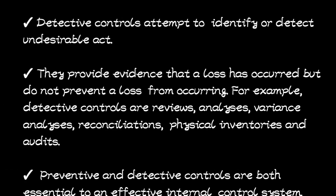Now let's look at detective controls. Detective controls are about detecting — finding out. These attempt to identify or detect undesirable acts, like identifying something that is not needed. They provide evidence that a loss has occurred, but they do not prevent a loss. Preventive controls prevent something from occurring, whereas detective controls just provide evidence of something.